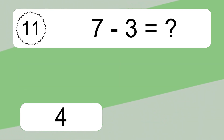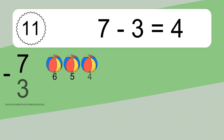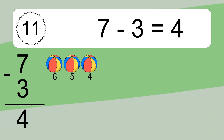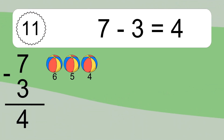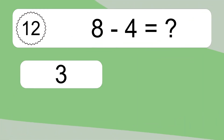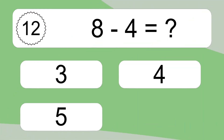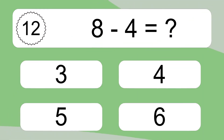7 minus 3 equals 4. Let's count it: 6, 5, 4. 8 minus 4 equals what?